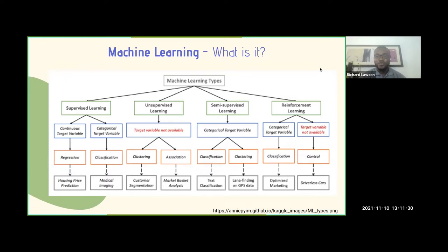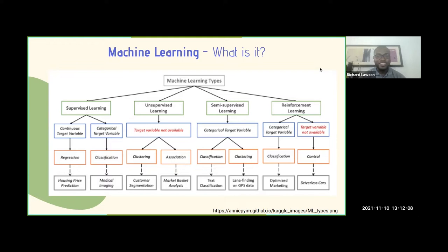We also have reinforcement learning, which boils down to optimized marketing. If you are in the marketing business and you'd like to let your customers know the target markets you have, you can use this to optimize the target market. For reinforcement learning with regards to control, an example is driverless cars. Tesla is an automobile company that is pushing the agenda of driverless cars. So these are the types of machine learning.